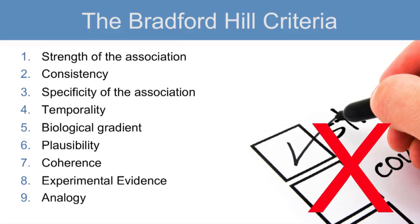Hill stated in 1965: "What I do not believe, and this has been suggested, is that we can usefully lay down some hard and fast rules of evidence that must be obeyed before we can accept cause and effect. None of my nine viewpoints can bring indisputable evidence for or against the cause and effect hypothesis, and none can be required as sine qua non. What they can do, with greater or less strength, is to help us to make up our minds on the fundamental question: Is there any other way of explaining the set of facts before us? Is there any other answer equally or more likely than cause and effect?" This is from the Environment and Disease: Association or Causation, in the Proceedings of the Royal Society of Medicine, May 1965.